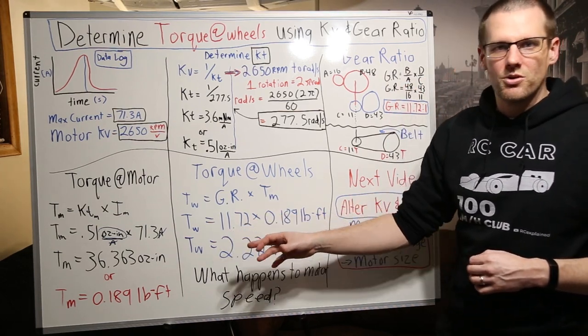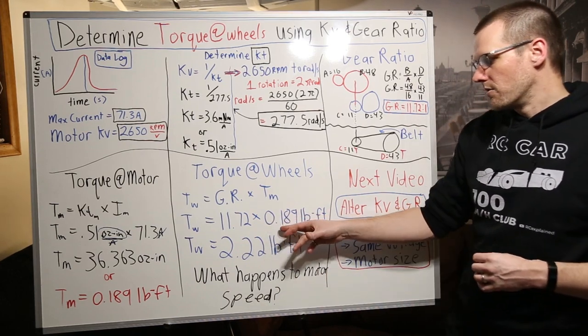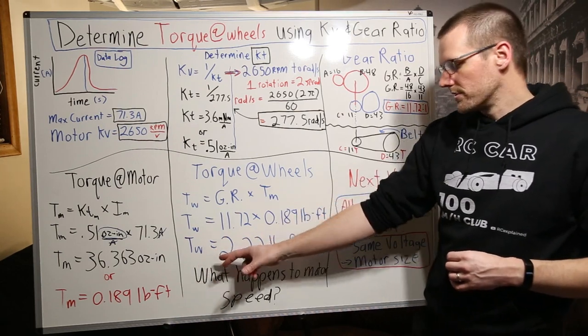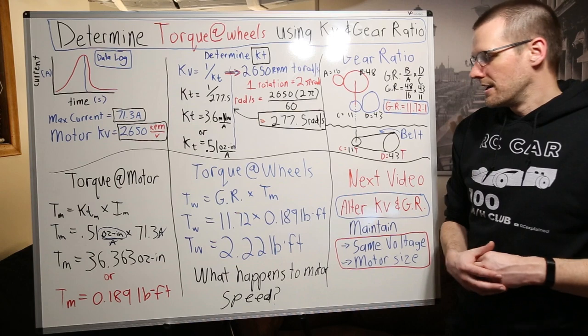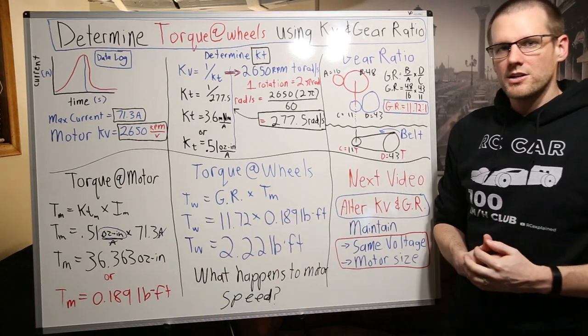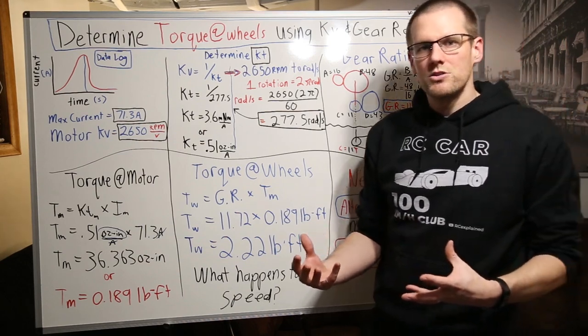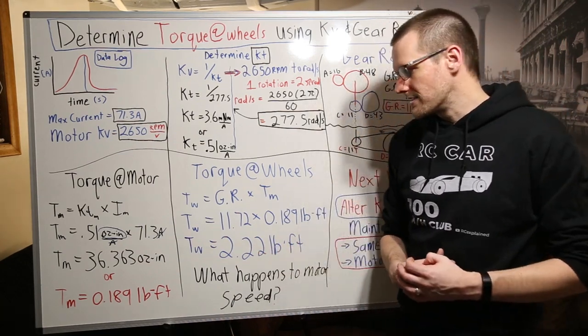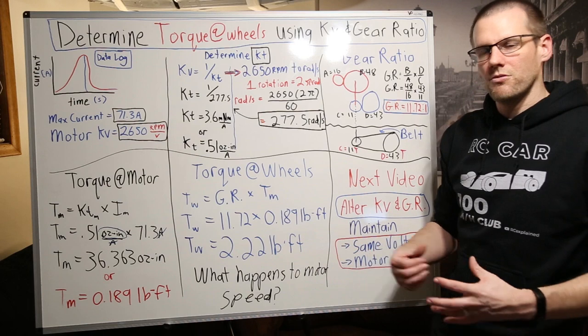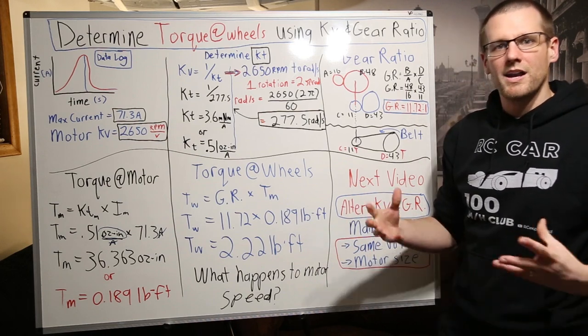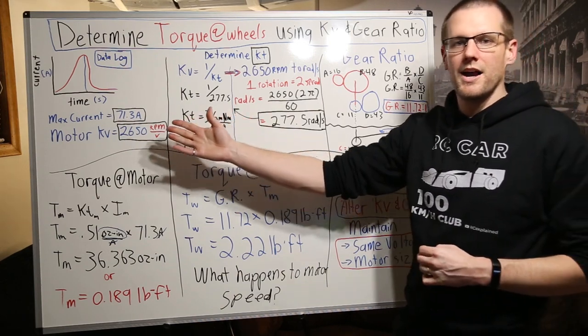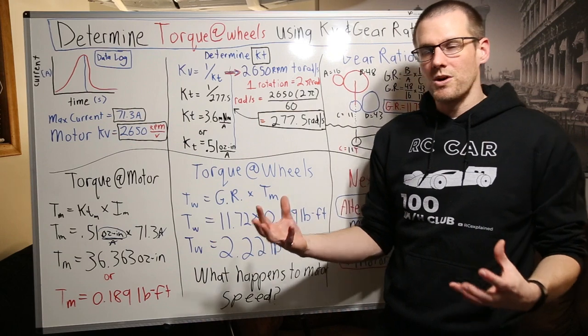We multiply it by 0.189 pound feet and we get the torque at the wheels as 2.22 pound feet. Now it's quite actually impressive to see that number. I know my actual full size vehicle puts out about 120 pound feet of torque at 7800 RPM or so. And looking at this number, it's actually quite impressive that this smaller radio control vehicle that does not have anyone sitting within it actually is able to produce this amount of torque. And it's not even really a high end system. This radio control vehicle is actually quite slow.